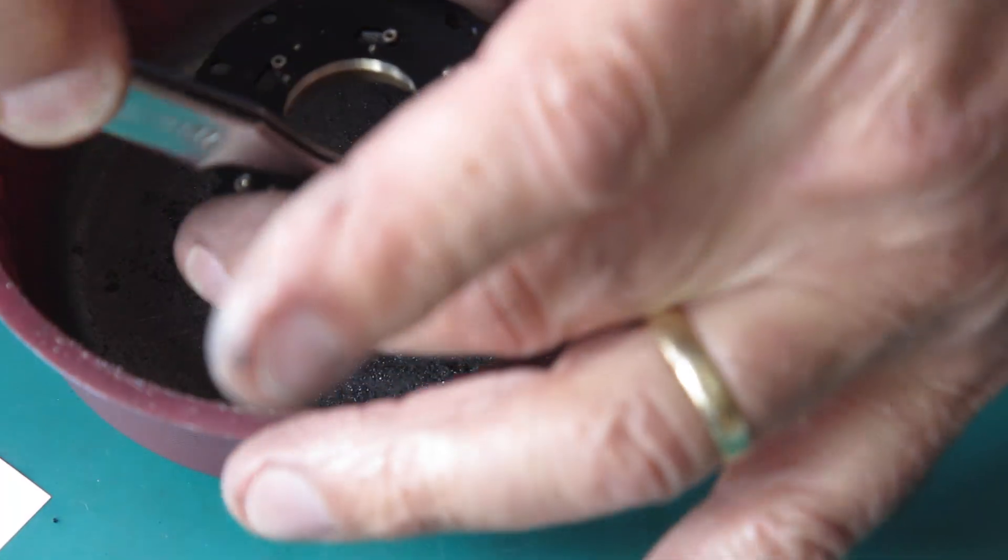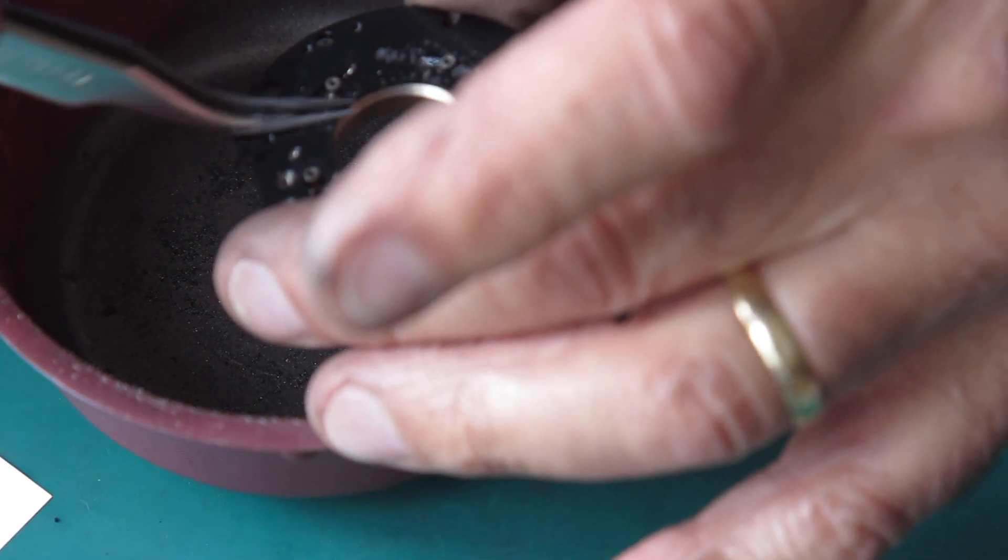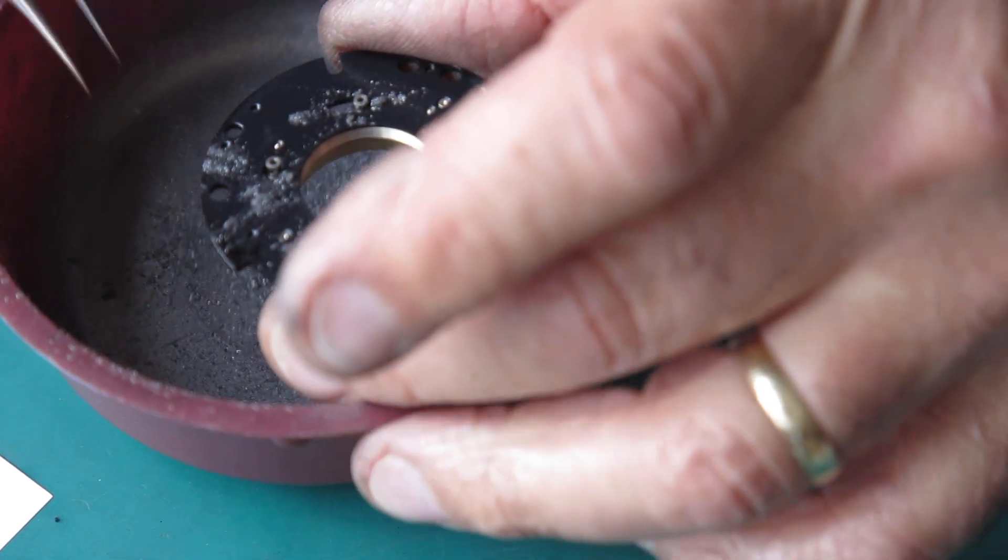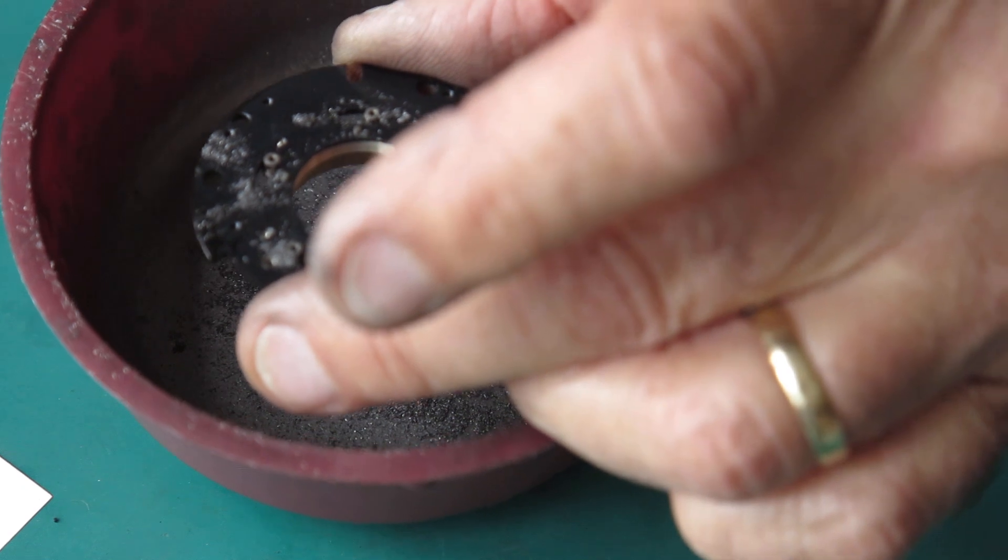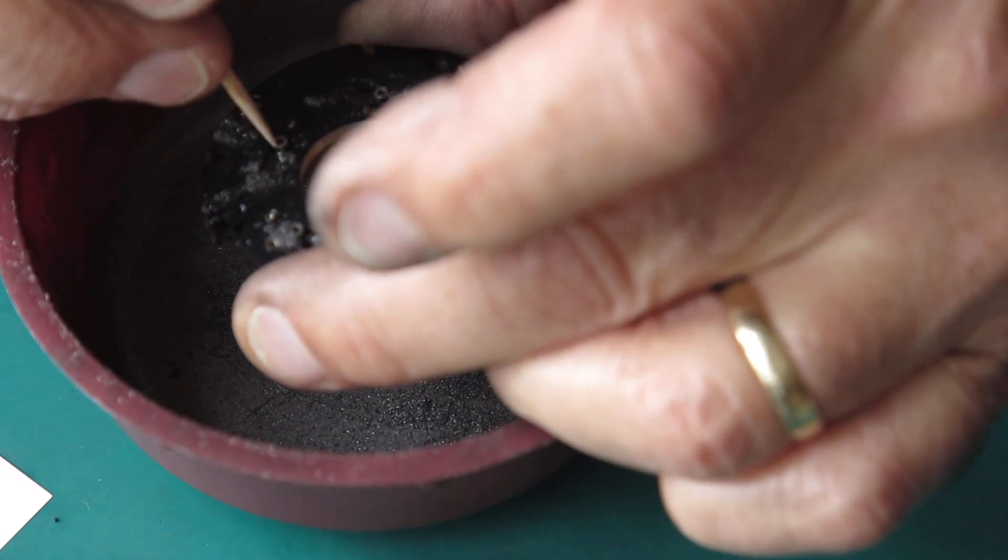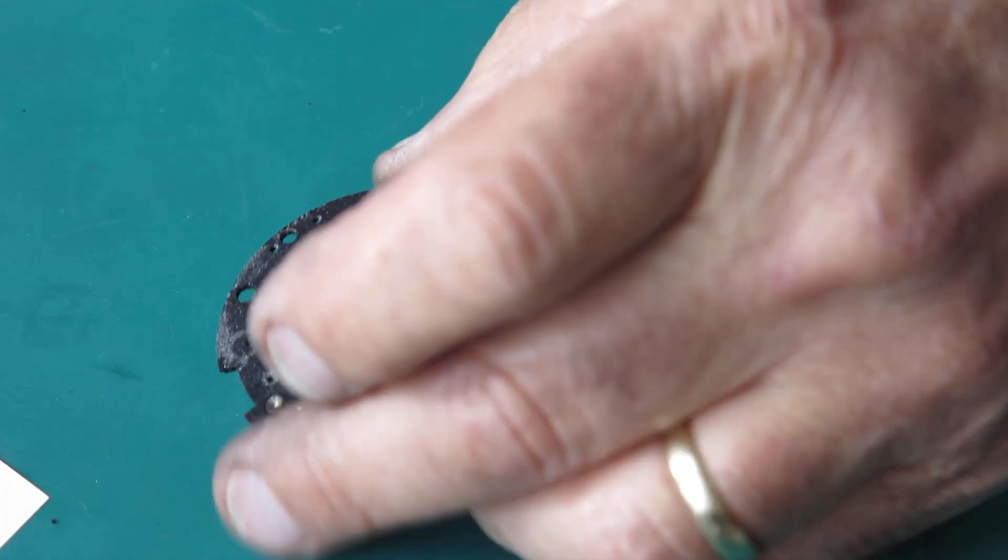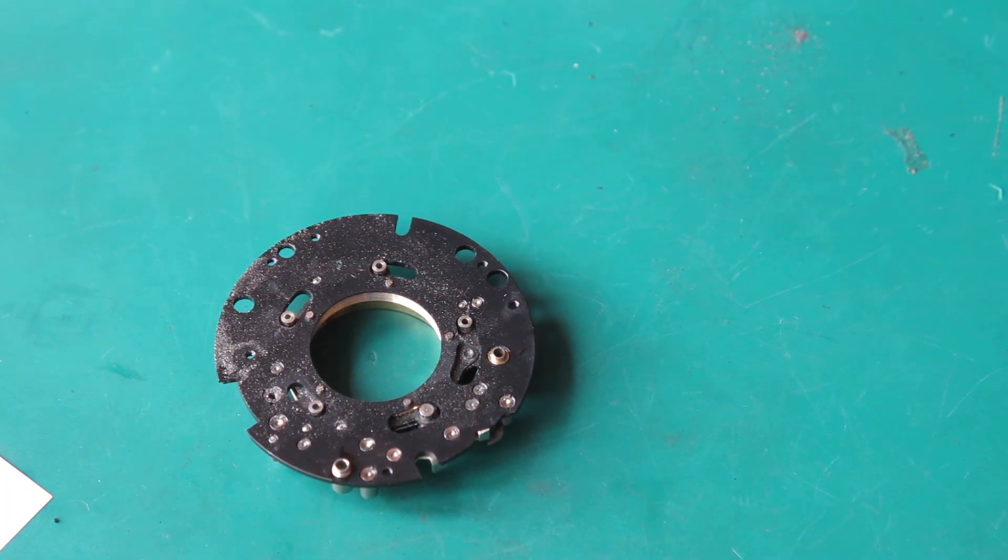Now I'm just going to lubricate this blade actuating ring with a bit of graphite powder, which I do just by dropping it in around the holes you can see there. And then just move that backwards and forwards to work it into areas that contact each other. So I'll just go and blow that out.